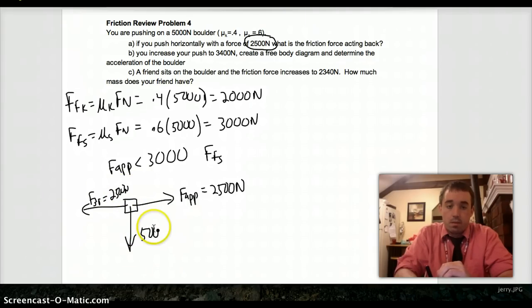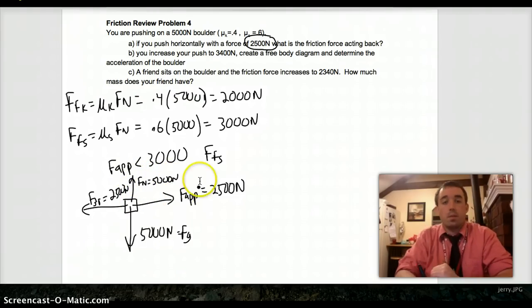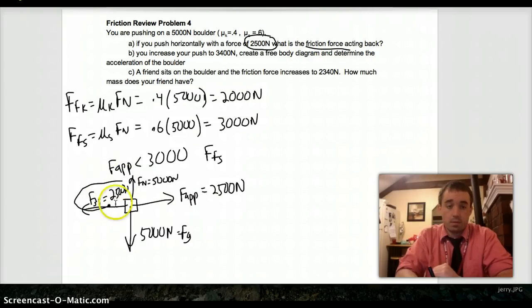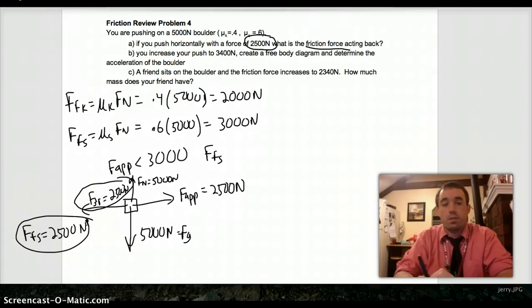Then you have 5,000 Newtons for the weight and 5,000 Newtons for the normal force. And we're done part A. Friction force acting back. Force of static friction, FFS, equals the same as what you're pushing, 2,500 Newtons. That's part A.